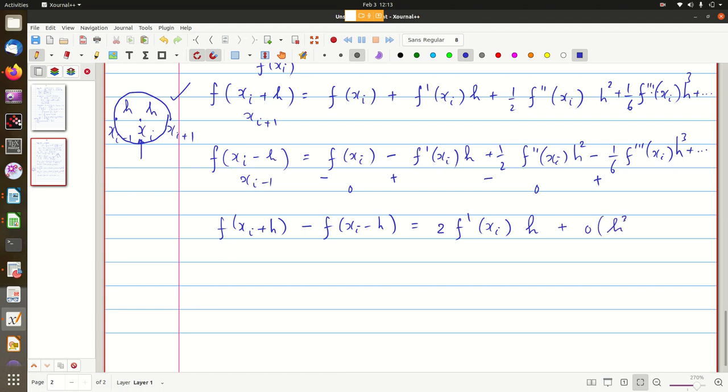So basically, this is the approximation what we call as the central divided difference approximation: f dash of xi equal to f of xi plus h minus f of xi minus h by 2h. So this is called central divided difference approximation.